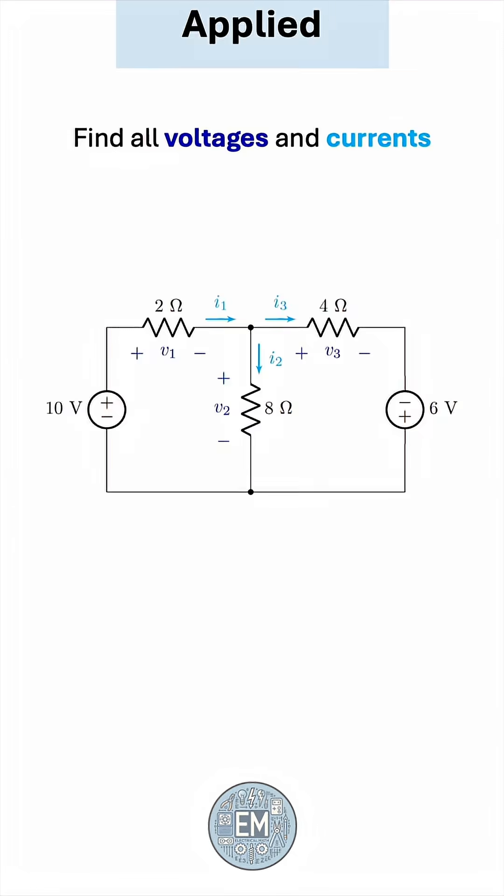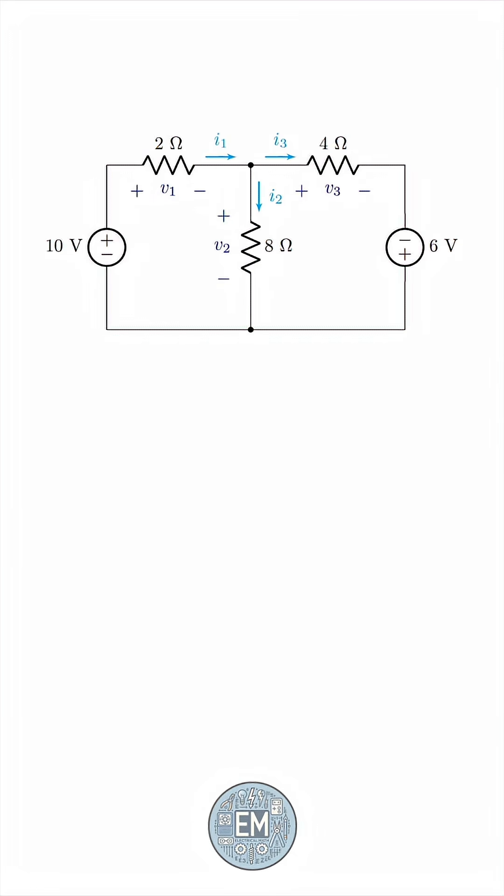We'll start by using Ohm's law. The voltage across each resistor is its resistance times the current through it. So V1 is 2I1, V2 is 8I2, and V3 is 4I3.